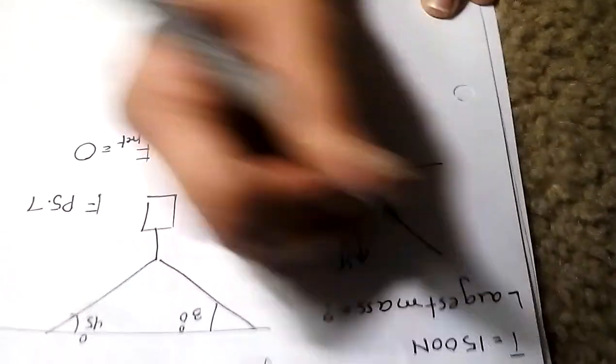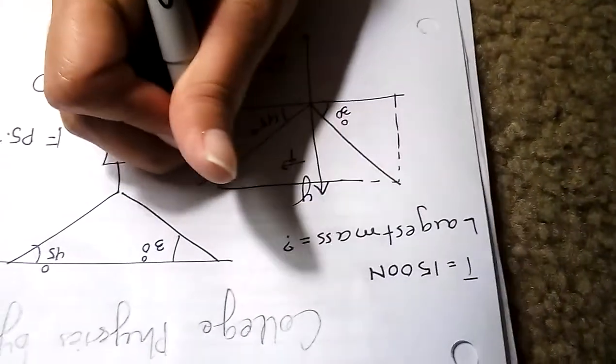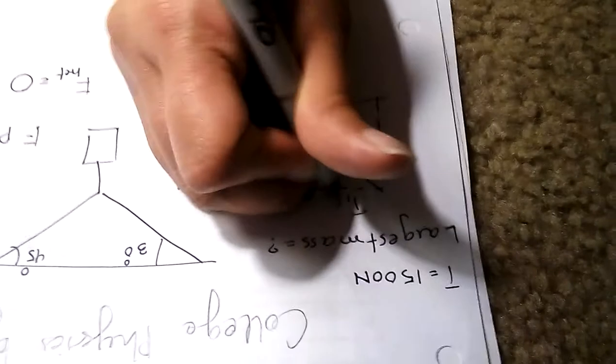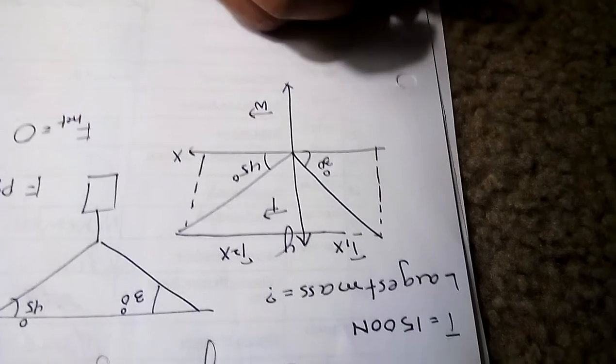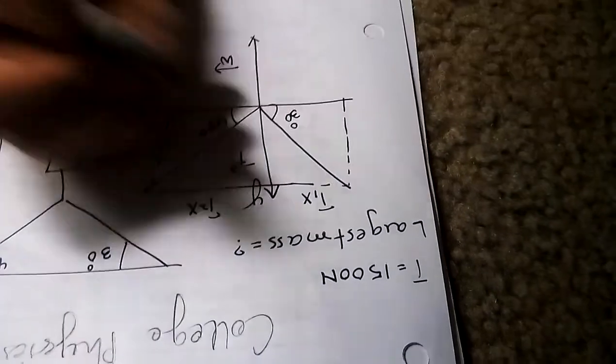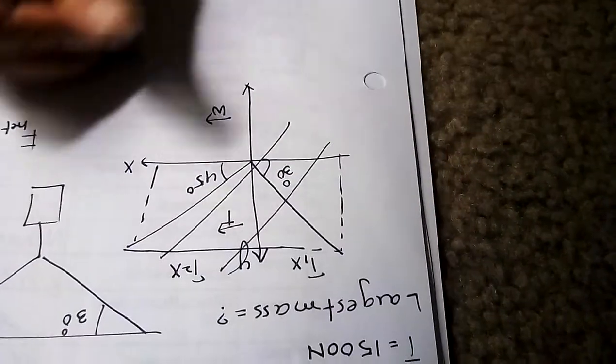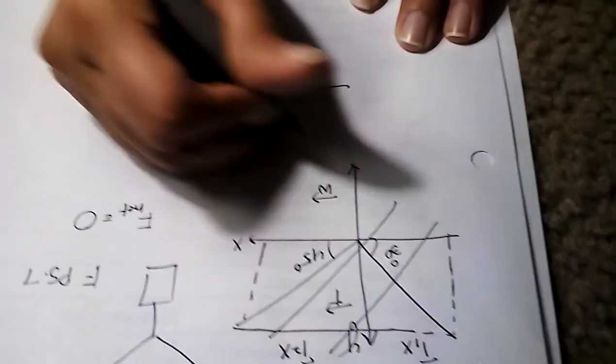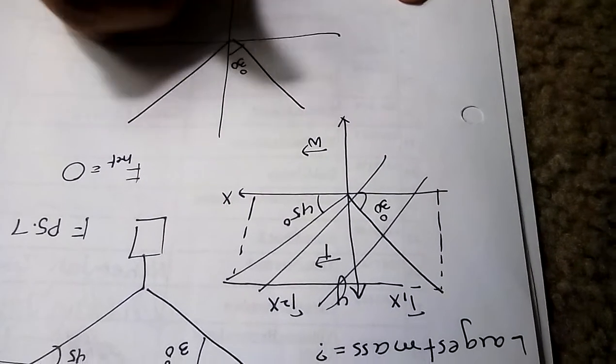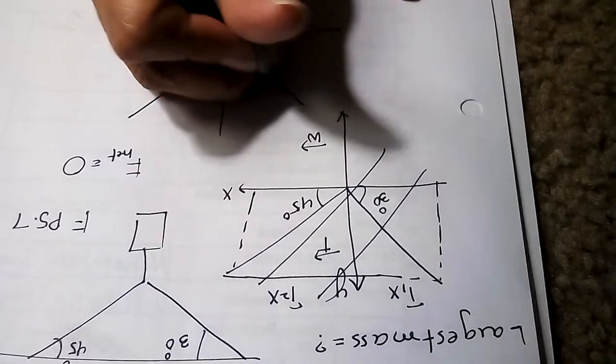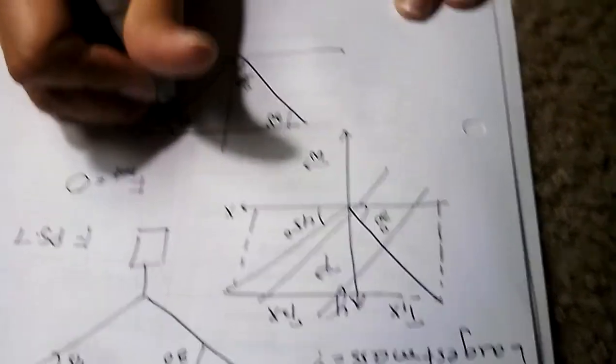So the direction of the weight force will be negative y direction. Okay, so let's just figure it out. Let's draw our angles: one is 30 degrees, the other is 45.